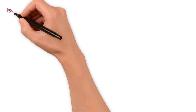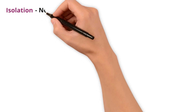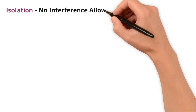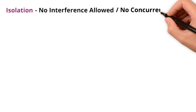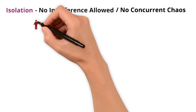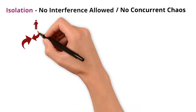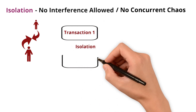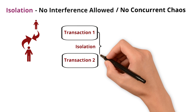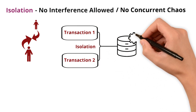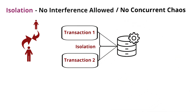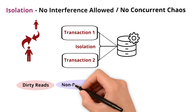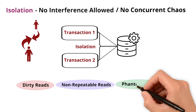Moving to Isolation — this ensures no interference allowed, or no concurrent chaos. Multiple users can access a database concurrently. Isolation ensures these transactions appear to happen one at a time, even if they are happening simultaneously. This prevents issues like dirty reads, non-repeatable reads, or phantom reads.